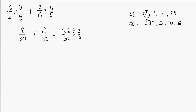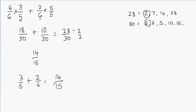I don't want to change the value of my fraction, so I will divide both numerator and denominator by 2. 28 divided by 2 is 14, and 30 divided by 2 is 15. So my final answer is 14 over 15. When you add the fractions 3 fifths and 2 sixths, you get 14 over 15. That's how you add fractions in a very simple way.